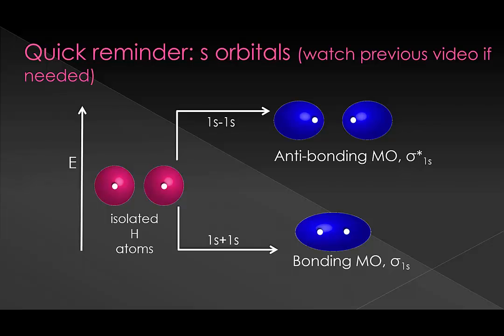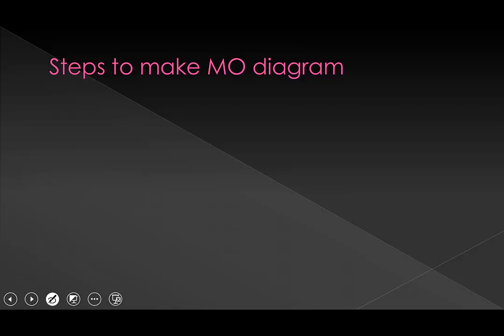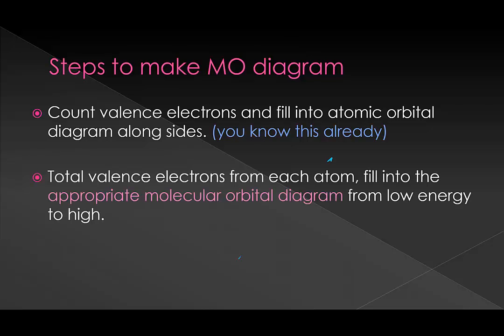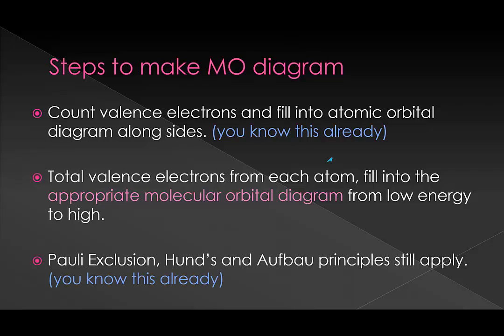We can do the identical things to p orbitals now. Let's remember our steps to making an MO diagram. First, we draw the atomic orbital diagrams along the side and write in our valence electrons. Then we take the valence electrons from each atom and fill into the appropriate molecular orbital diagram from low energy to high. These molecular orbital diagrams are calculated using a computer program and we just give you the results. Pauli exclusion, Hund's, and Aufbau principles still apply — so two electrons per orbital with opposite spins, and if you have orbitals at the same energy level, you fill across first and then duplicate.